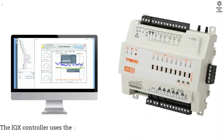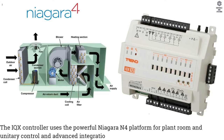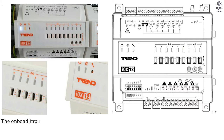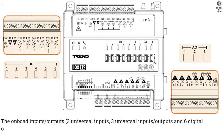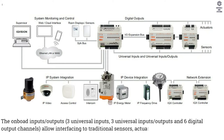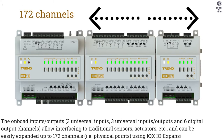The IQX Controller uses the powerful Niagara N4 platform for plant room and unitary control and advanced integration. The on-board inputs, outputs — three universal inputs, universal inputs/outputs, and six digital output channels — allow interfacing to traditional sensors, actuators, etc., and can be easily expanded up to 172 channels (physical points) using IQXIO expansion modules.